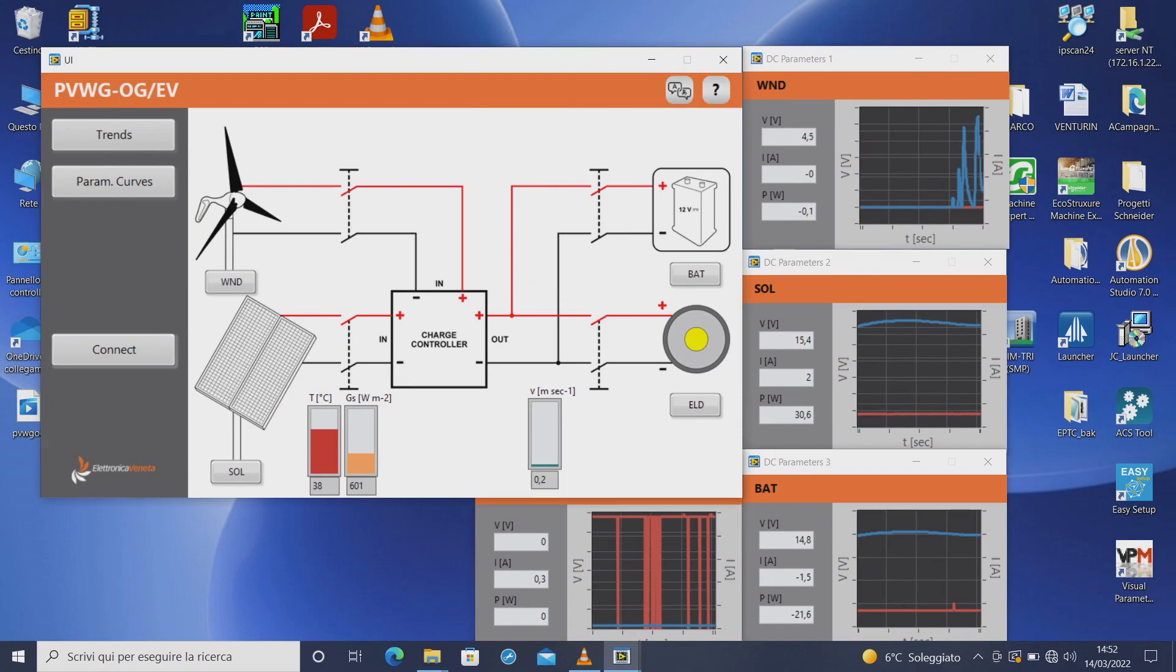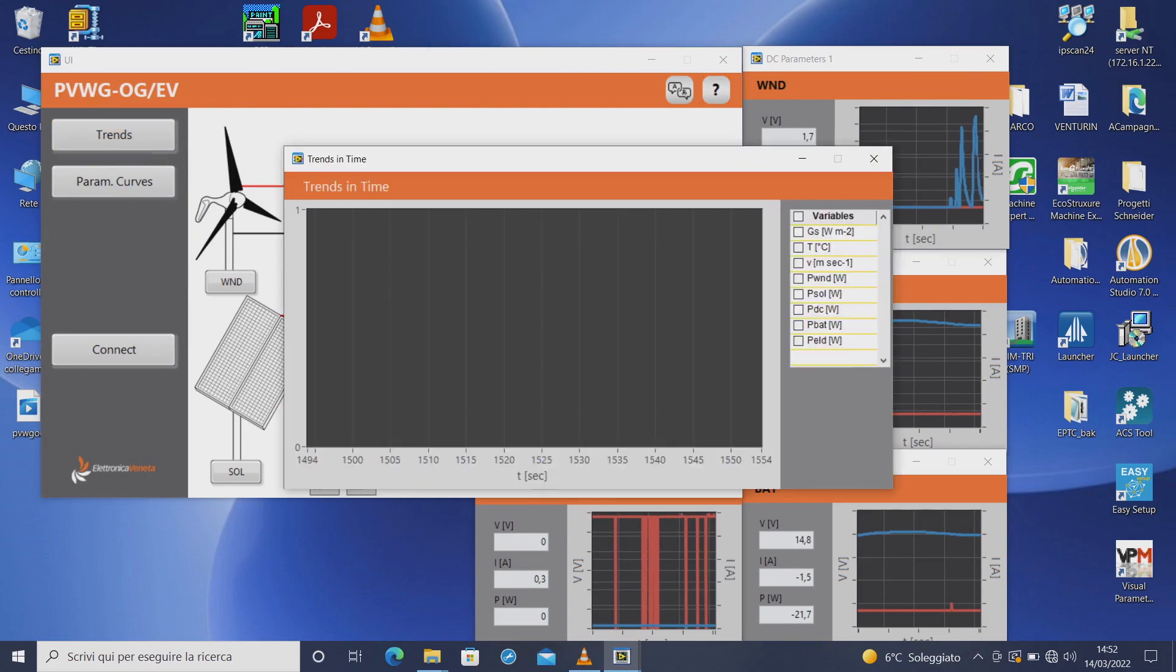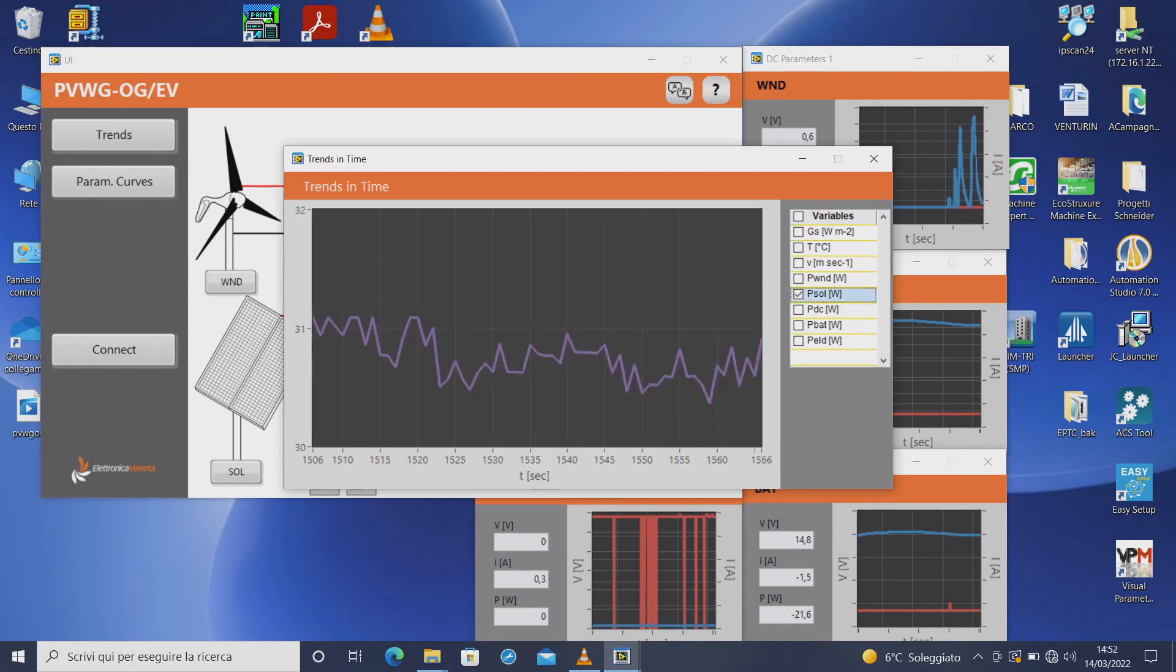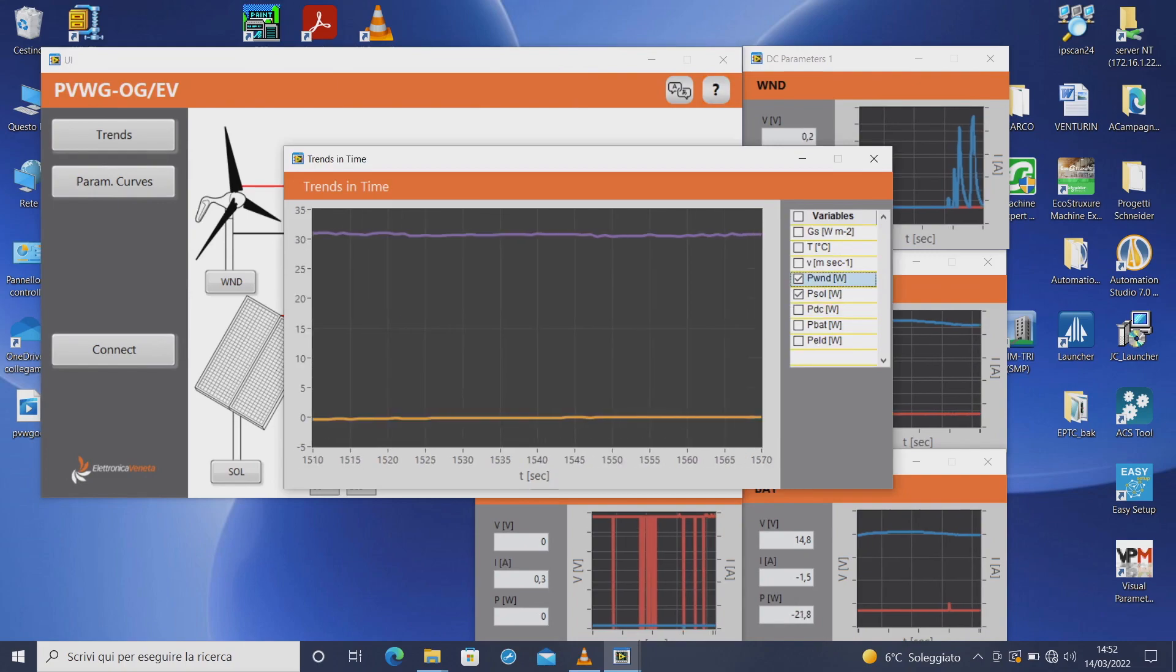By having these windows I can in real time check the evolution of the energy in the system. Then we have the trends window in which we see the time series of our variables. We can just select the one to display and we have the evolution in time.